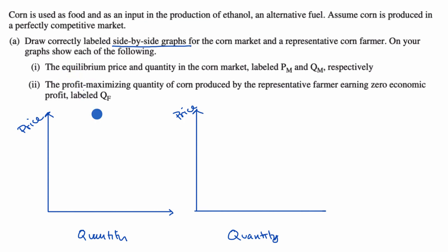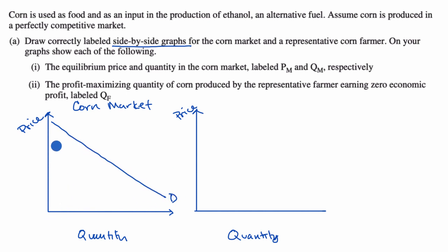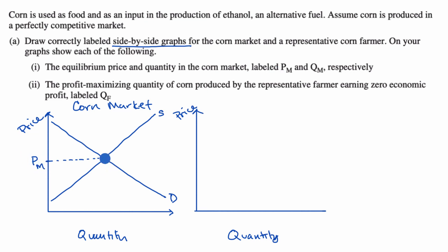Let's draw the corn market. Our demand curve might look something like this — when price is high, low quantity demanded; when price is low, high quantity demanded. And supply goes the other way around, so our supply curve would look something like this. The intersection helps us figure out the equilibrium price — that's P sub M — and then this is going to be our equilibrium quantity, Q sub M.